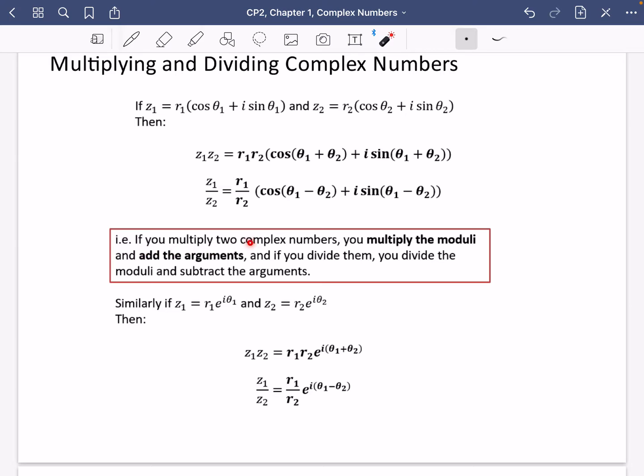So I've just written that here. If you multiply two complex numbers, you multiply the moduli and add the arguments. If you divide them, you divide the moduli and subtract the arguments. You will have come across that in year one.